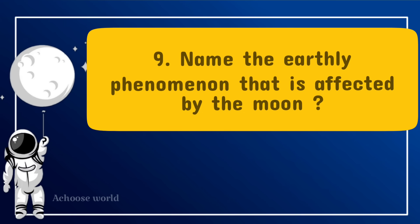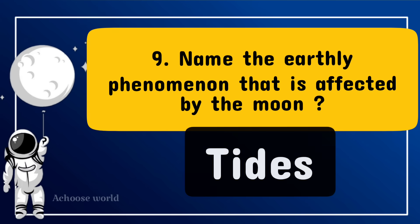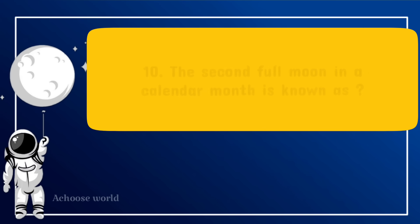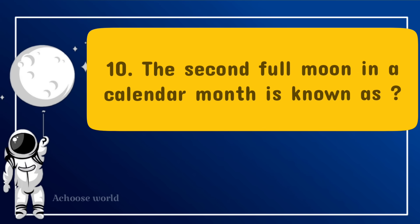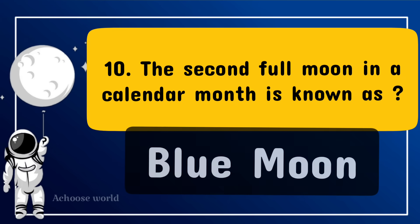Name the earthly phenomenon that is affected by the Moon. Tides. The second full moon in a calendar month is known as Blue Moon.